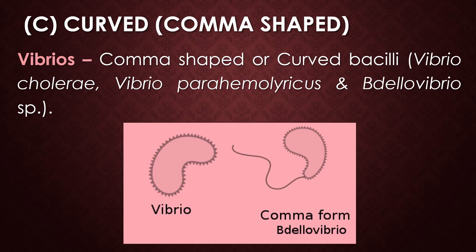The next type of bacterial shape is the curved or comma shaped bacteria, widely referred to as vibrios. Vibrios are comma shaped or curved shaped bacilli. Examples include Vibrio cholerae, Vibrio parahaemolyticus, and Desulfovibrio species. These three are examples of comma shaped bacteria.